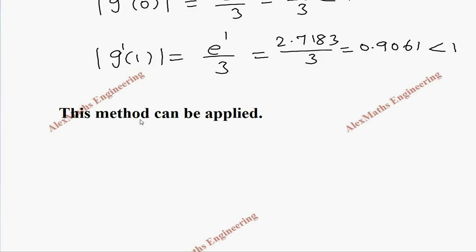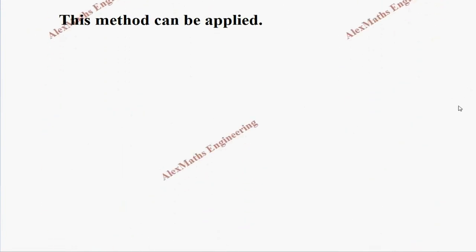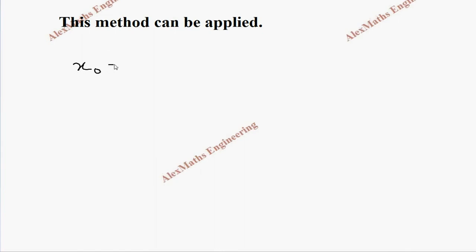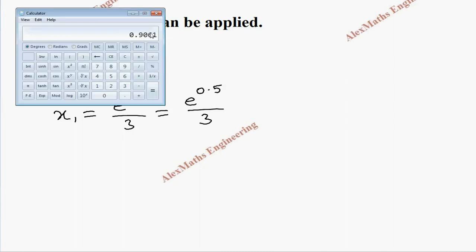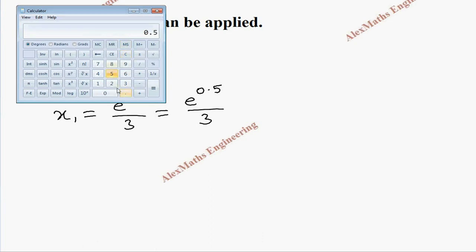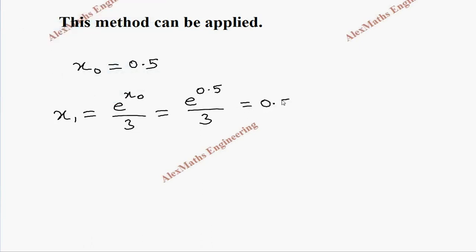Since both values are less than 1, this method can be applied. We choose x₀ = 0.5 between 0 and 1. Then x₁ = e^(x₀) / 3 = e^0.5 / 3. Using a calculator: 0.5 → e^x → divide by 3, rounded to 4 decimal places gives x₁ = 0.5496.